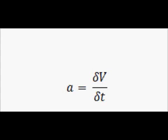Acceleration is going to be a change in velocity over the change in time. What I'm going to do is take the vertical components of both the first position and the second position of the particle with their respective velocities, and work out what the change in velocity is.